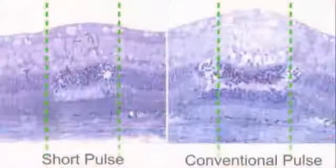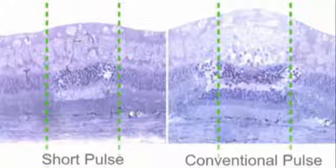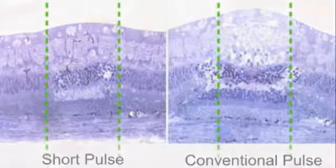As seen in histology, PASCAL's short pulse durations reduce heat diffusion into the retina and choroid.